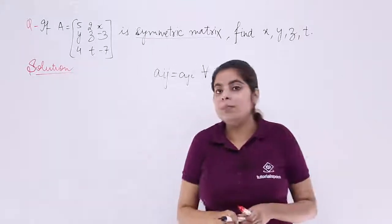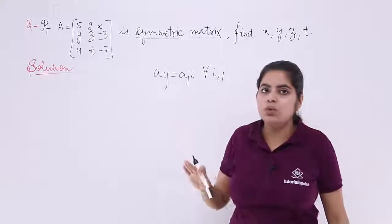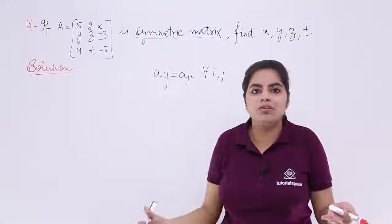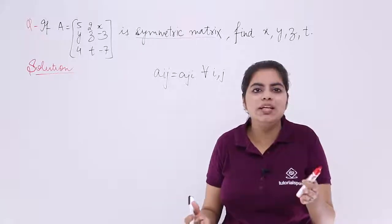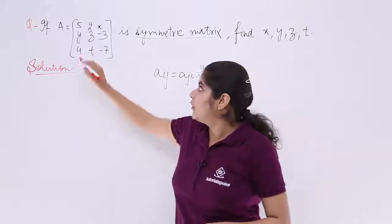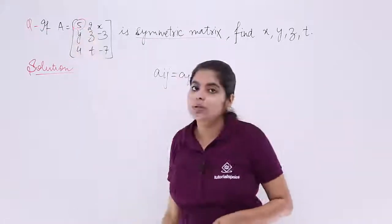That means if I have A_12, that will be equal to A_21. If I have A_13, that will be equal to A_31. If I have A_23, that will be equal to A_32 and so on. Now, 5 is known to me, there is no issue with 5.